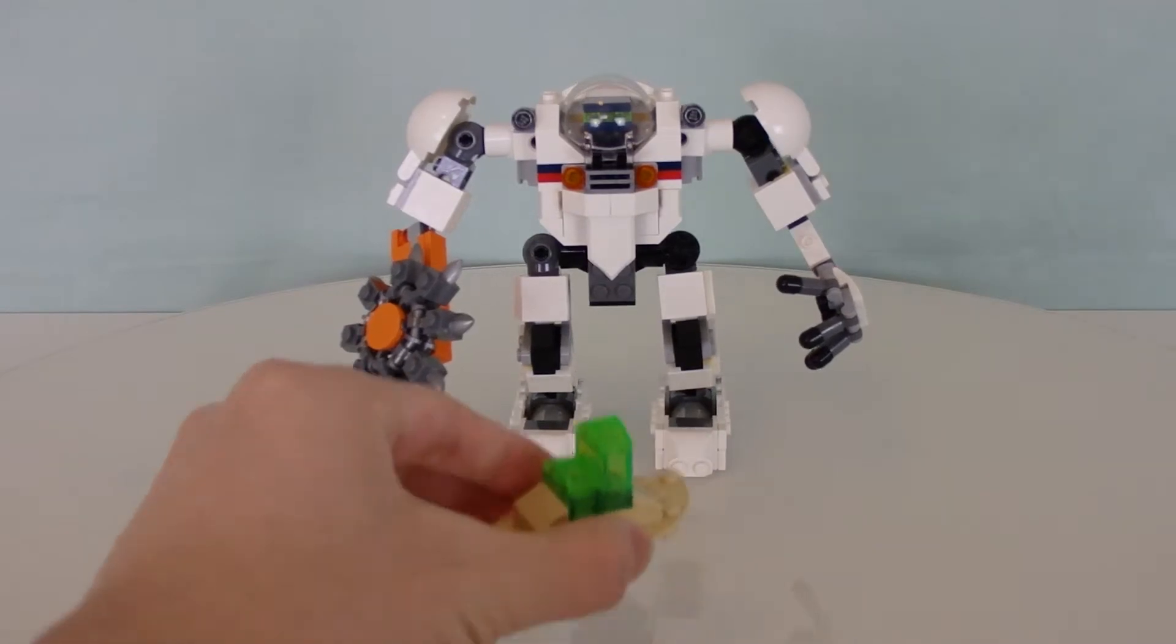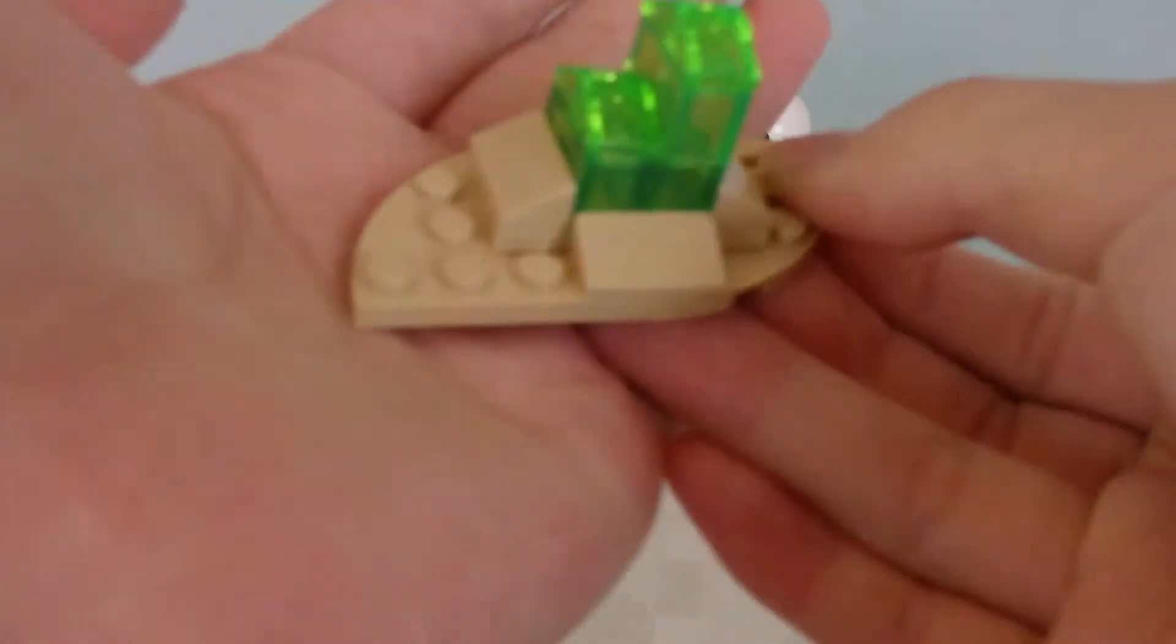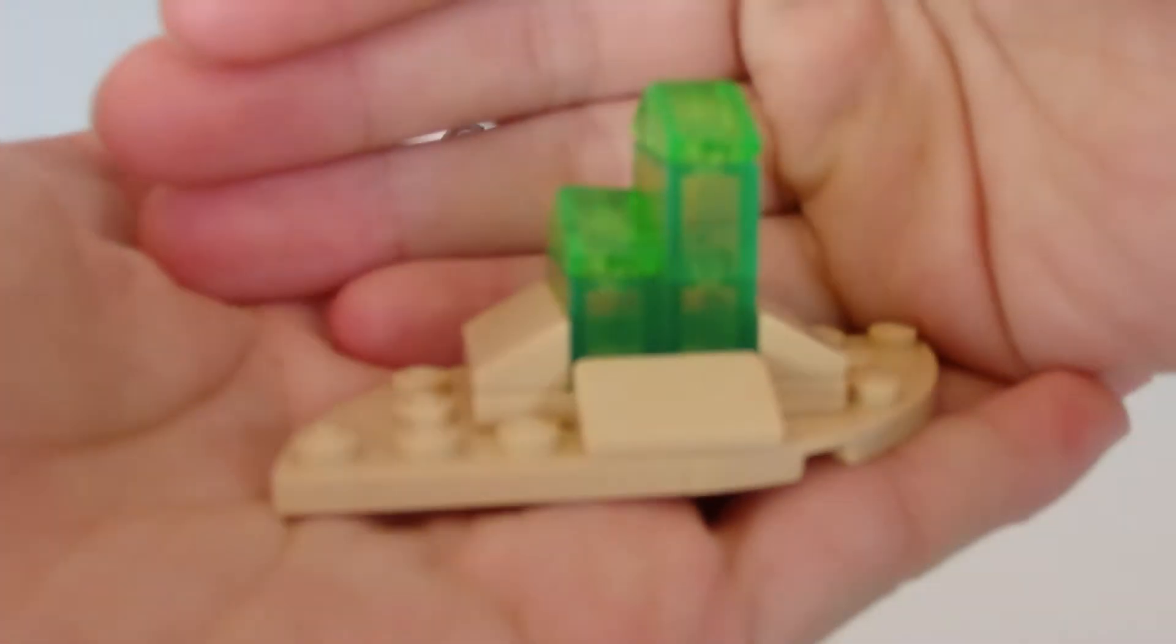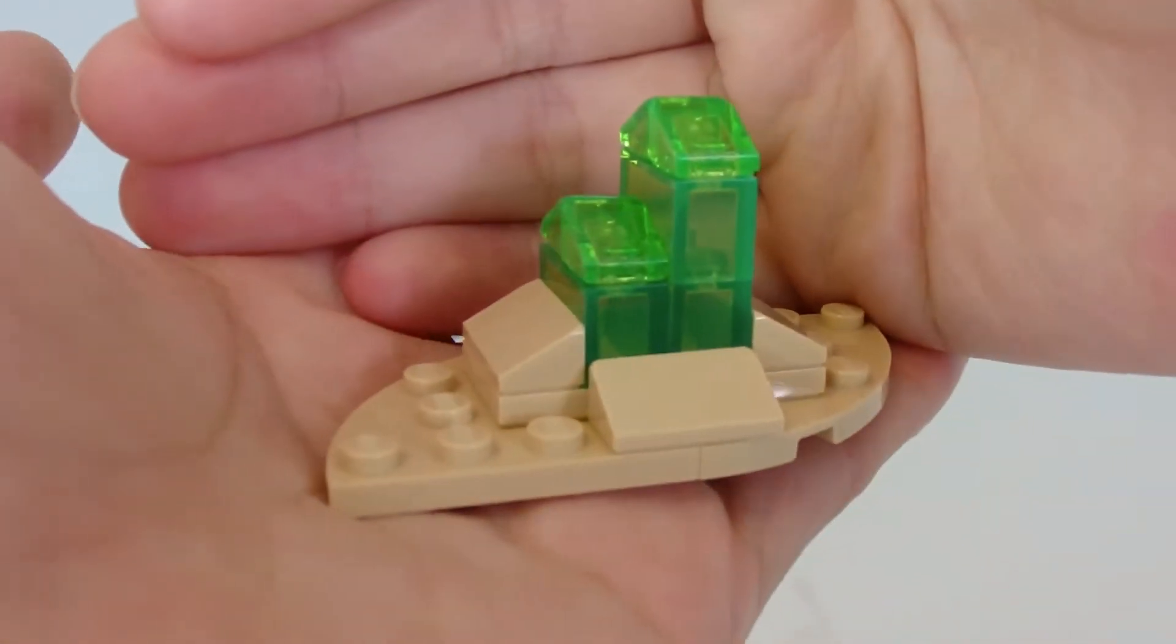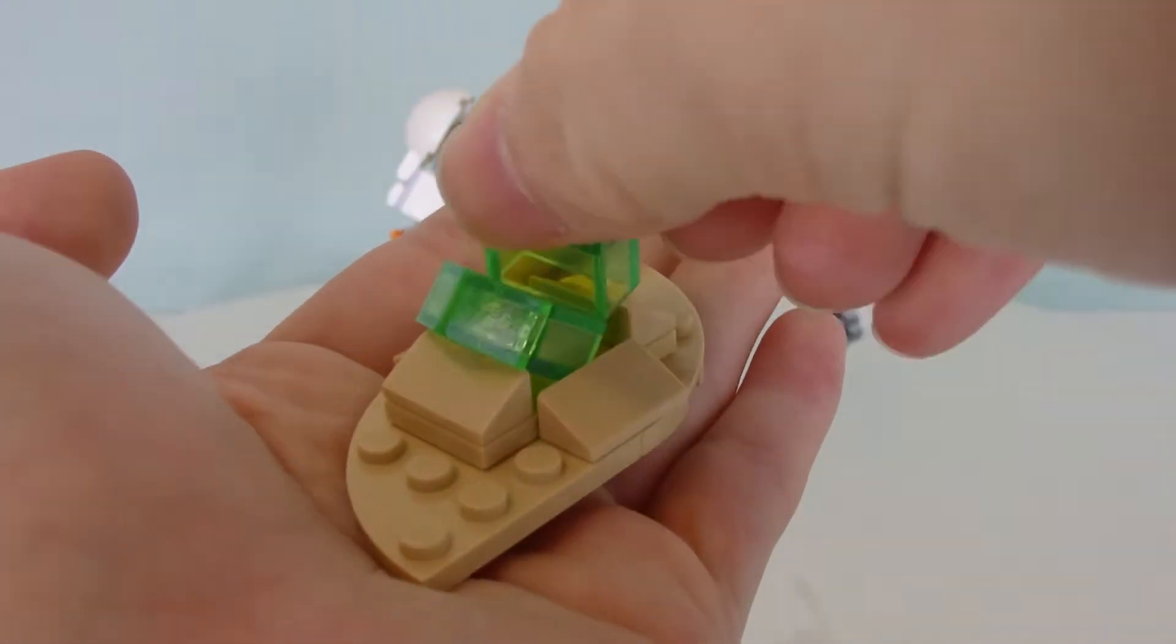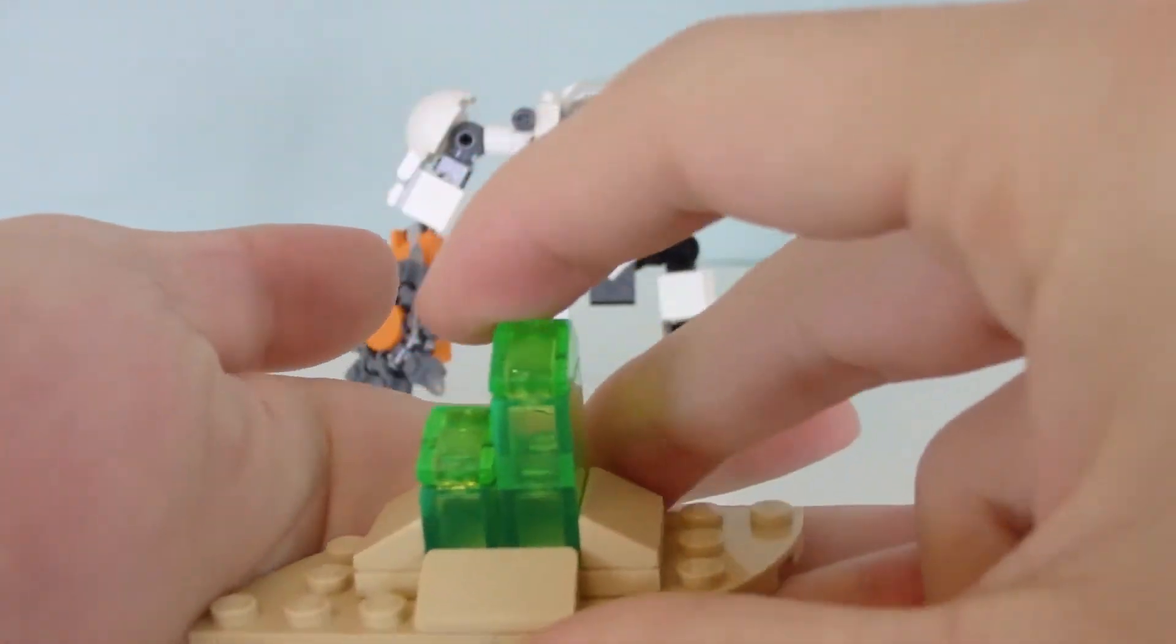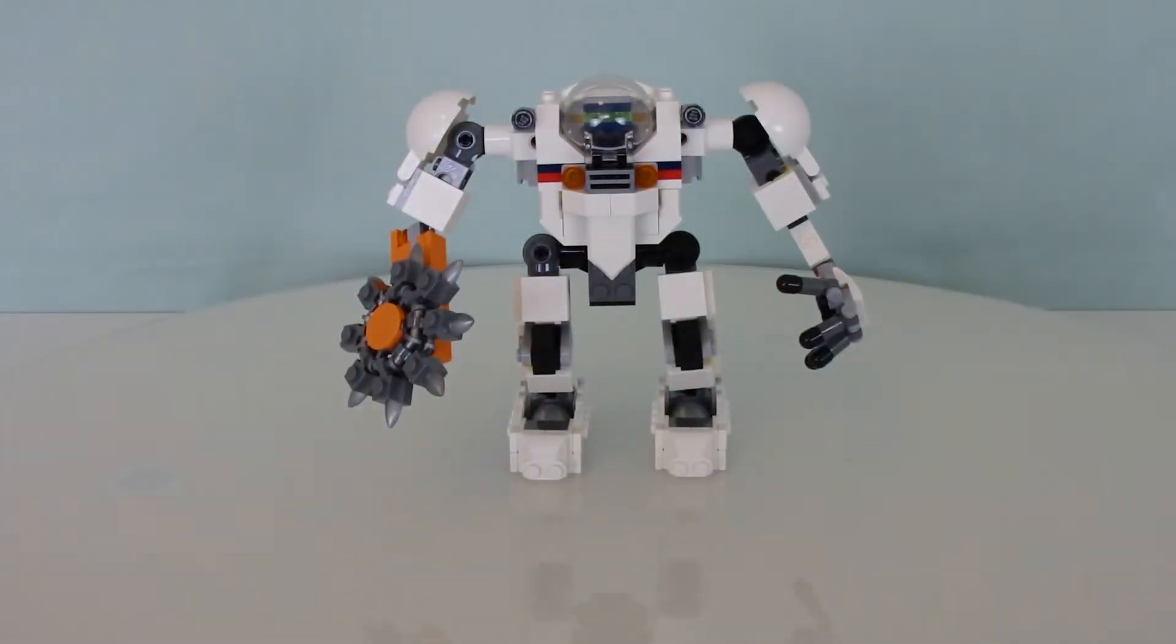And of course, the other thing for the mech to pick up is this little terrain with the crystals. I think this is what the mech is trying to harvest, is these crystals. Trying to get it out. As you can see, they can be removed just like that. Really nice transparent green pieces here. Very, very nice.